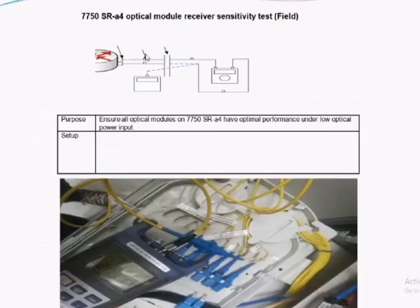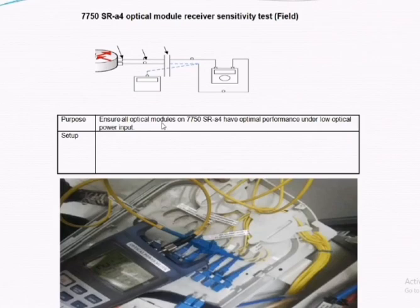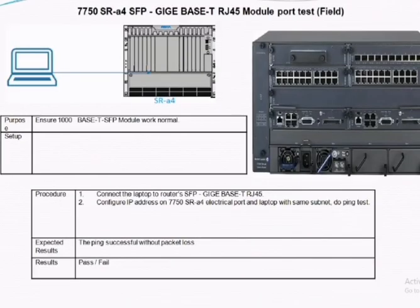The next one is the optical module receiver sensitivity test, which is used to check the sensitivity of the optical power port. For optical power, you need to raise the power and it goes into shutdown mode. Once the port becomes up again, you check the sensitivity test result from the sensitivity power meter.